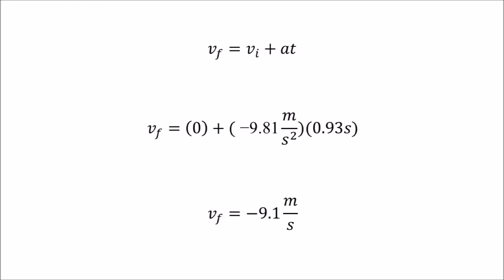We can also find the velocity when the binder contacted the ground using the equation final velocity equals initial velocity plus acceleration times time. We can substitute in the same values to find that the final velocity is negative 9.1 meters per second.